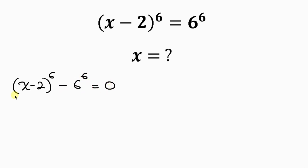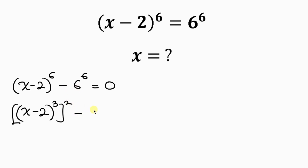This expression can be simplified as x minus 2 all raised to the 3, that quantity squared, minus 6 to the 3 squared, equal to 0. From indices, powers multiply: 3 times 2 gives back 6, and the same applies to the other term.